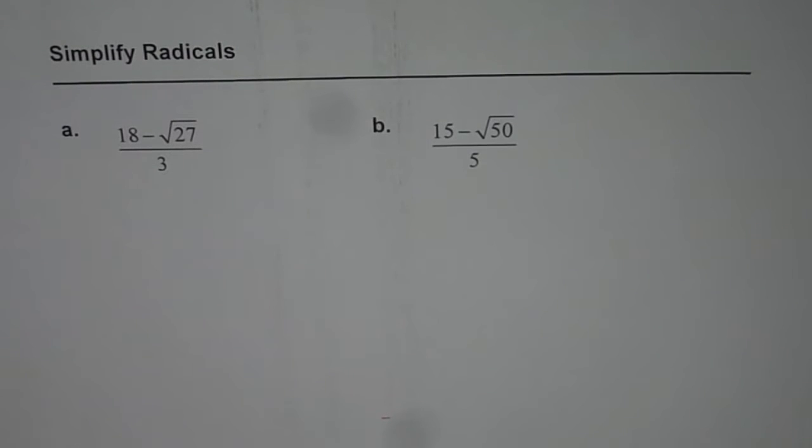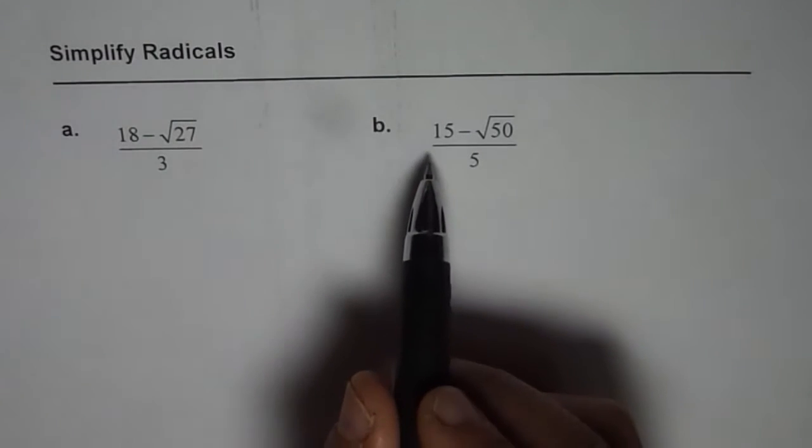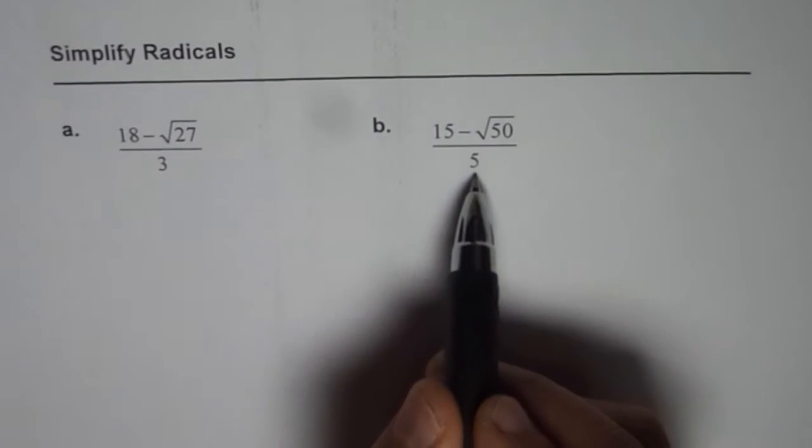I'm Anil Kumar and in this video we will learn how to simplify radicals. We have 18 minus square root of 27 divided by 3 and 15 minus square root of 50 divided by 5.